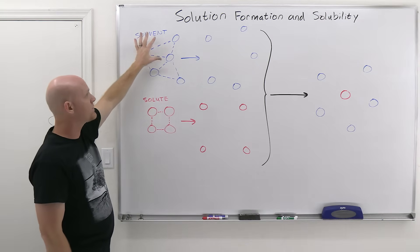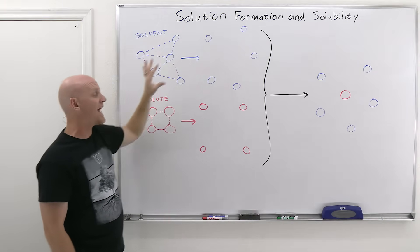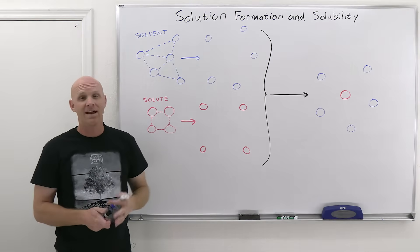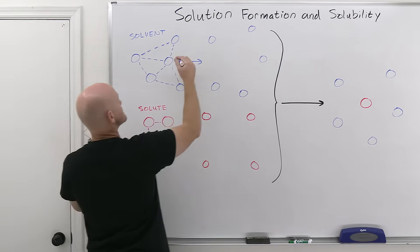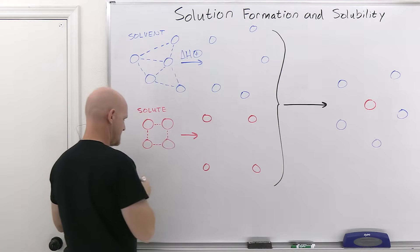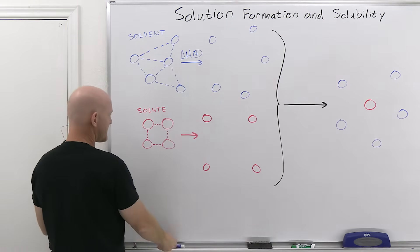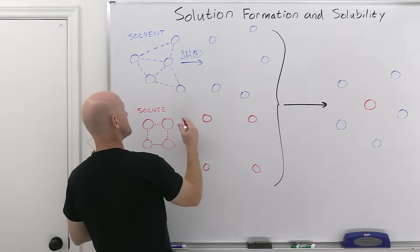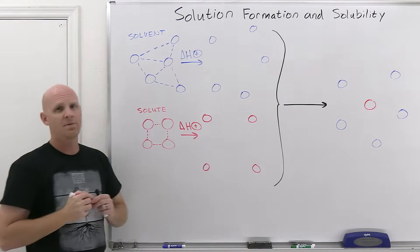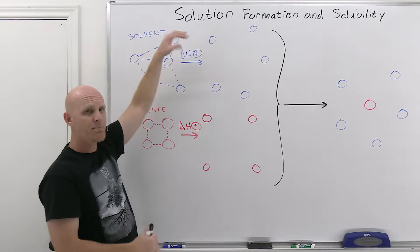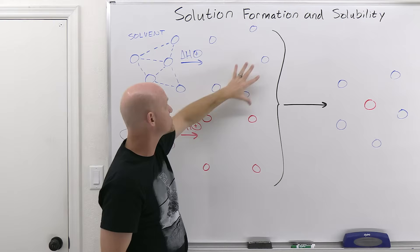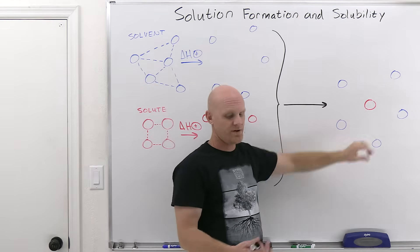If you've got to break intermolecular forces in separating out the solvent molecules and in separating out the solute molecules, then that's going to be endothermic in both cases. Endothermic refers to delta H being positive. So for these first two steps — separating out the solvent and solute particles respectively — delta H is going to be positive. But now that you've got them separated, you can take one of these solute particles and fit it in between a bunch of solvent particles.